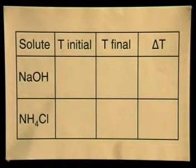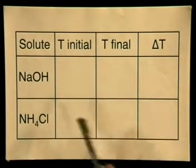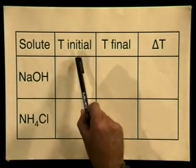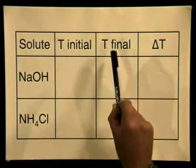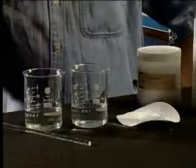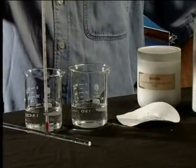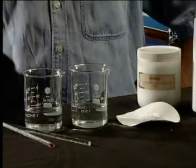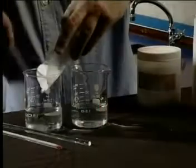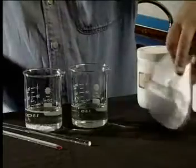The dependent variable will be the temperature change. Let's draw up a table to record our results. Whenever you carry out an experiment, make sure that you draw up a table before actually doing the experiment. We need to record the initial temperature before adding the solute and the final temperature after all the solute has dissolved. The temperature of the solvent is 26 degrees Celsius. Now I will add the sodium hydroxide to the beaker and stir with the glass rod until all the solute has dissolved.